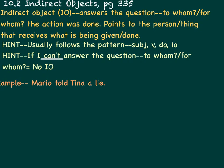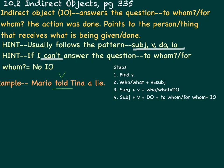Example: Mario told Tina a lie. The steps: Find the verb—told. Who or what told? Mario, which is the subject. Mario told who or what? A lie. That's the direct object. Told a lie to whom or for whom? Tina, which is the indirect object. Notice this keeps the pattern mentioned in the hint: subject, verb, direct object, indirect object.